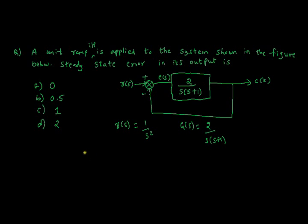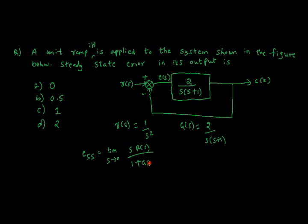We know the steady state error formula: E_ss = limit as s→0 of s·R(s) / [1 + G(s)], because this is a negative feedback system with unity gain in the feedback path.